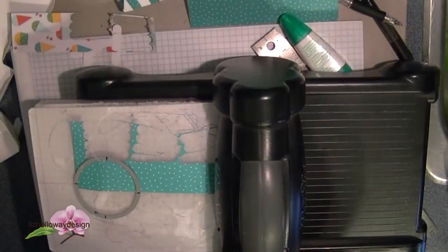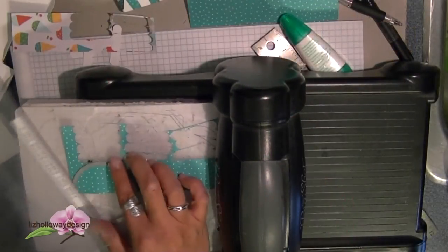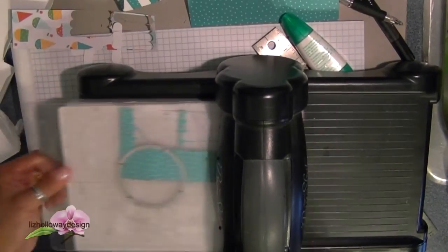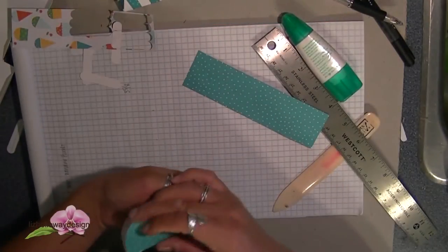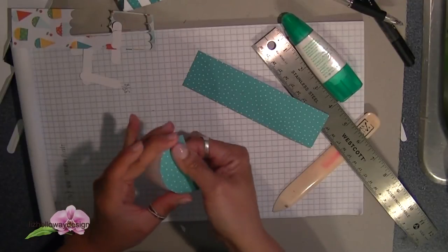Next I'm using the number 4 framelits and then cutting a coordinating piece for the front to cover the semi-round awning. And glue it in front and trimming the excess off.